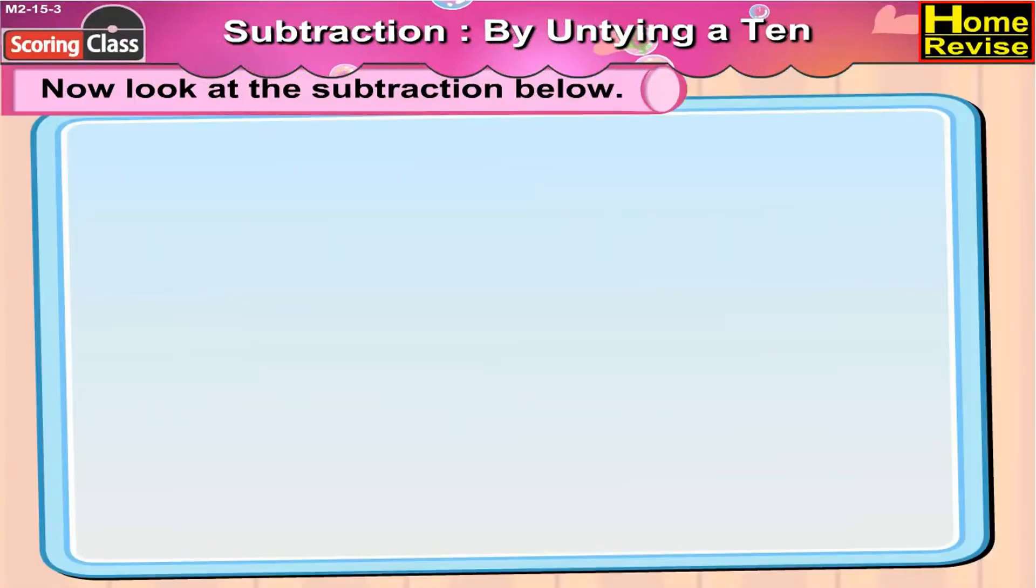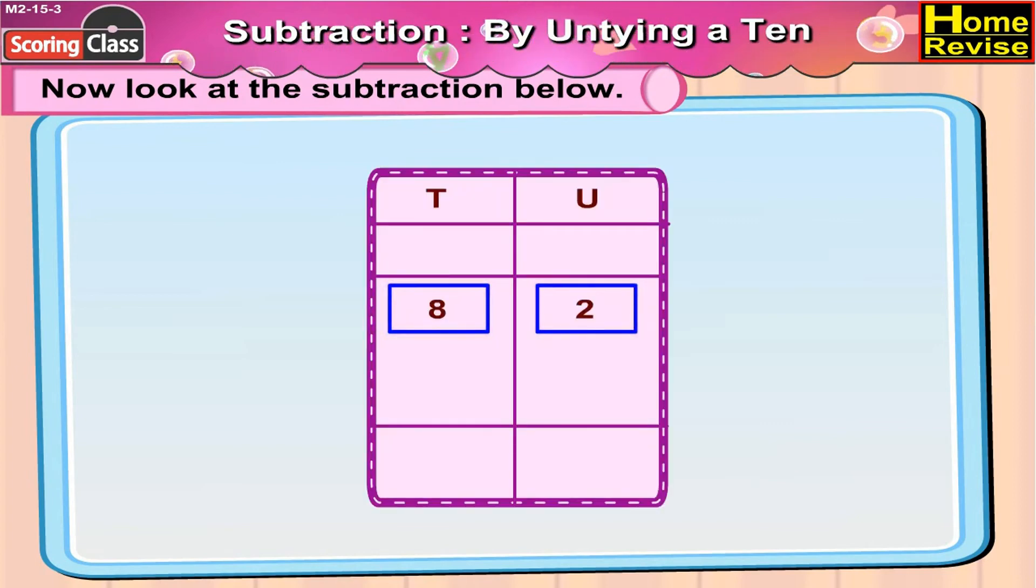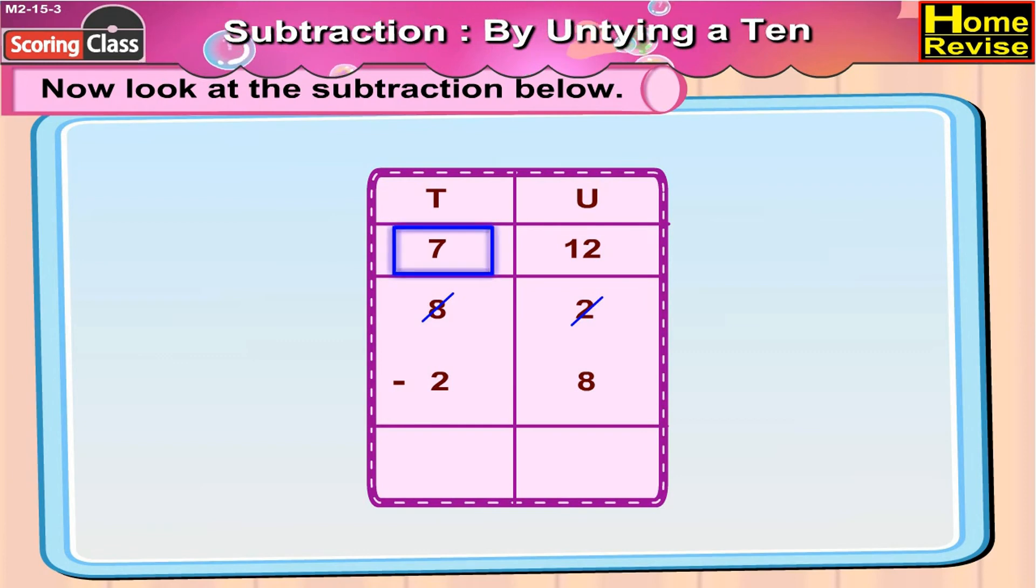Let's do the following subtraction in the same way. Here we have 8 tens 2 units minus 2 tens 8 units. You cannot subtract 8 units from 2 units, so we will untie 1 ten from 8 tens. 8 tens 2 units is the same as 7 tens 12 units. 12 minus 8 is 4, 7 minus 2 is 5. So 82 minus 28 is 54.